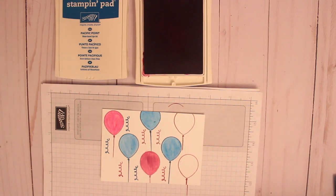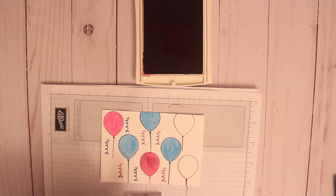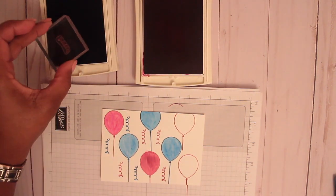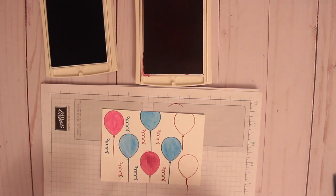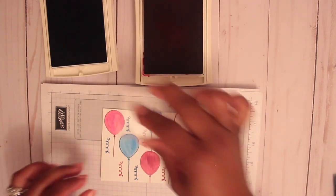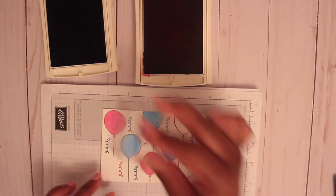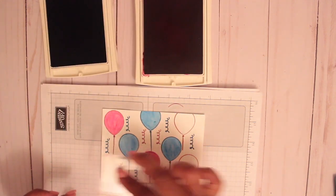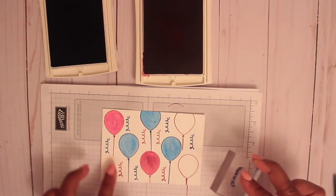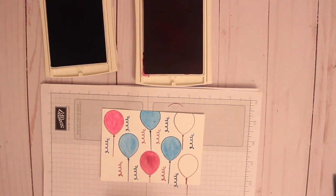Let me clean my stamp. Let's see, get some of the Pacific blue in there. Maybe I'll put another balloon here off the center, have some of these coming off the page.